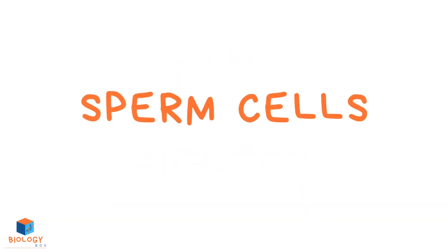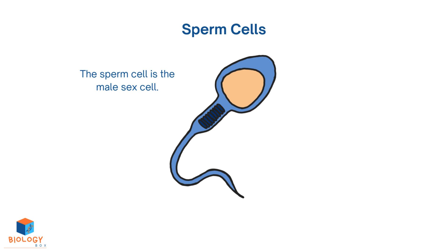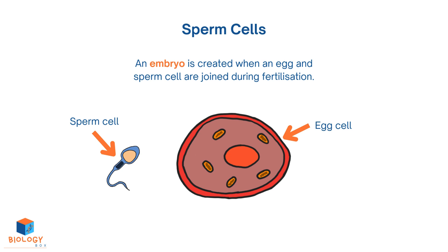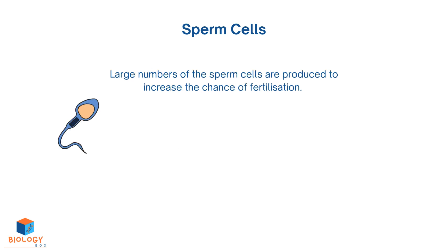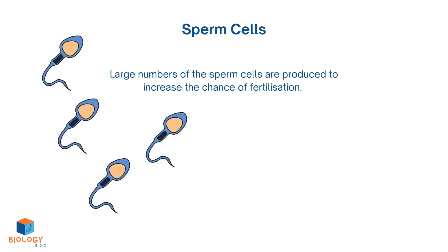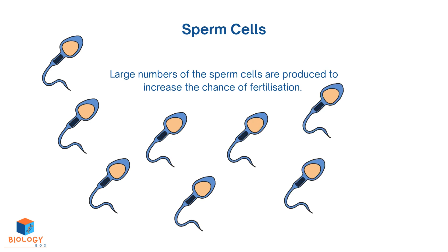Sperm cells. The sperm cell is the male sex cell. Its function is to fertilize an egg cell. An embryo is created when an egg and sperm cell are joined during fertilization. Large numbers of sperm cells are produced to increase the chance of fertilization.